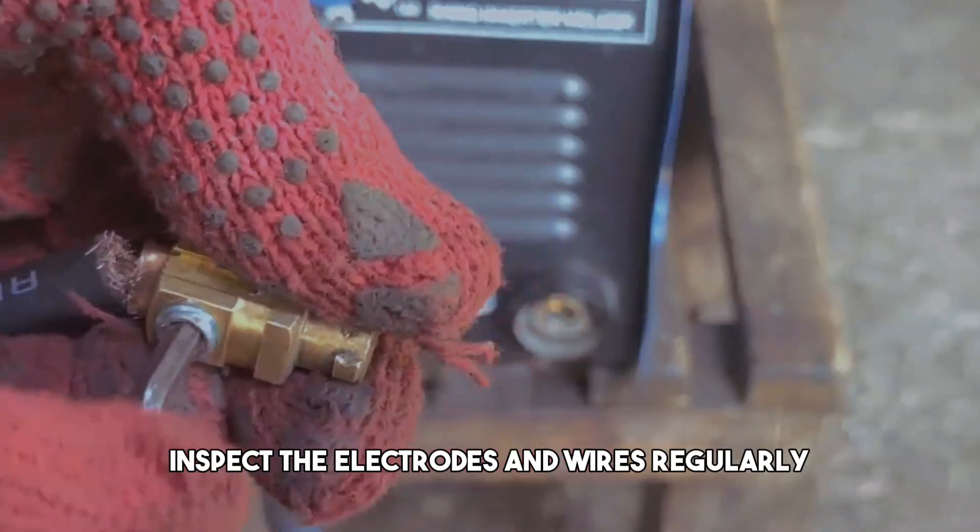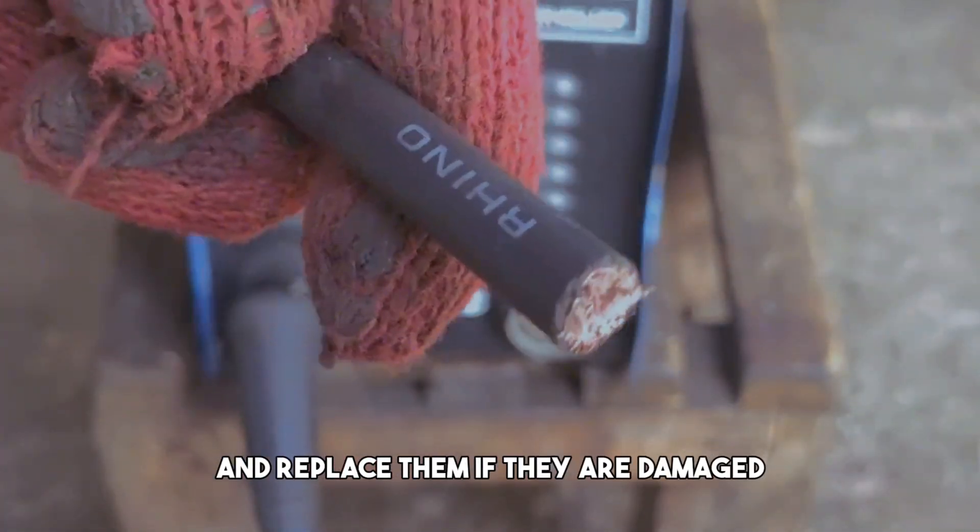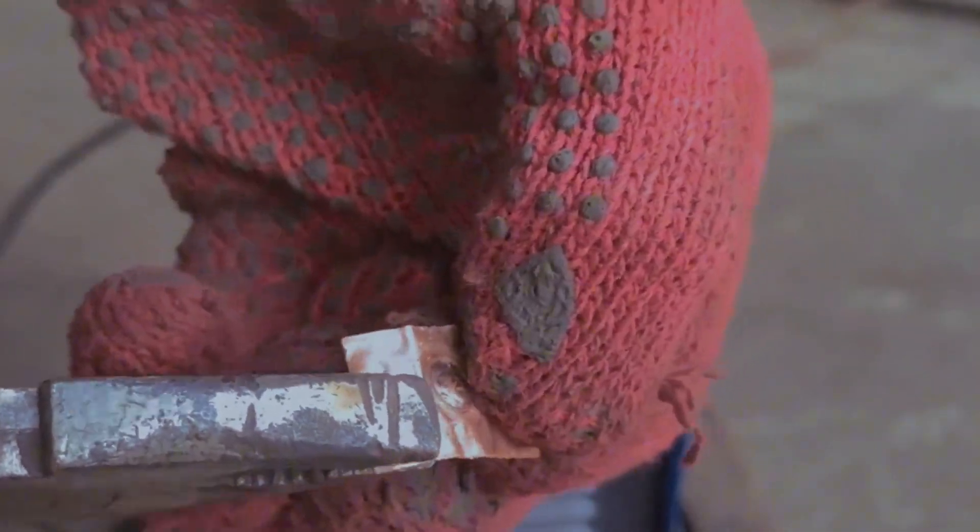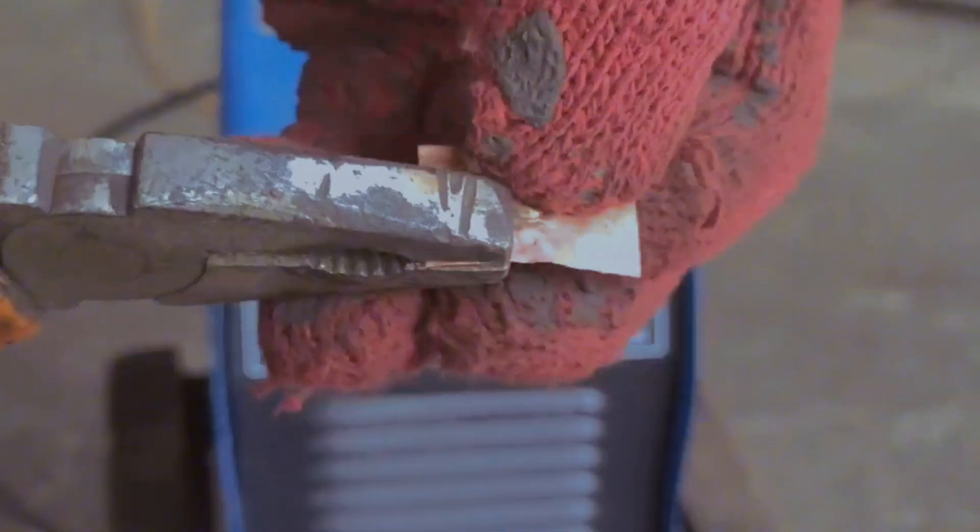Follow the manufacturer's instructions and the welding standards for the best results. Inspect the electrodes and wires regularly and replace them if they are damaged, dirty, or worn out. This will ensure a smooth and consistent welding performance.